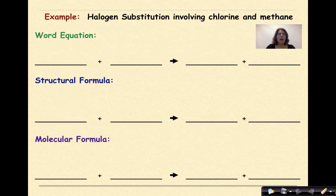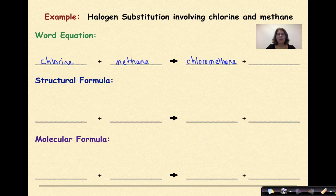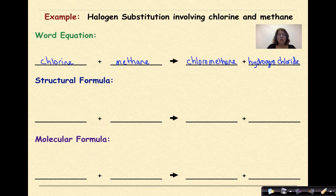Let's look at an example. Halogen substitution involving chlorine and methane. So in terms of a word equation, we're going to have chlorine gas reacting with methane. As a result, we'll form chloromethane and hydrogen chloride. And I do say hydrogen chloride here, as this is not assumed to be an aqueous solution. So when we do see that HCl, we're just going to represent it as hydrogen chloride.